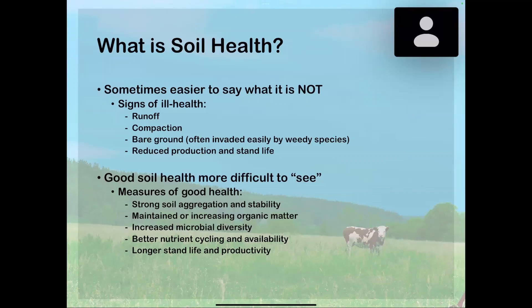My colleagues are going to give me a bad time because my favorite topic is soil salinity, and I neglected to include that here. If we see signs of salt deposits or crusts forming at the surface of the soil, that would also be an indicator of reduced soil health. Good soil health is often a lot more difficult to see because it requires measurement — analyzing for things like good aggregation, stability of those aggregates, maintained or increased organic matter content, and microbial diversity. Those would be indicators that the system is in good health.